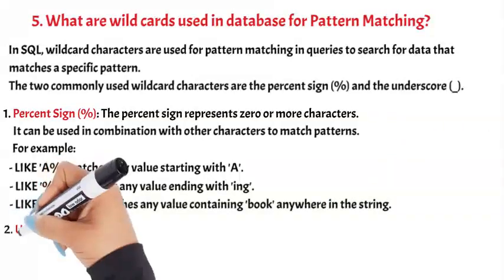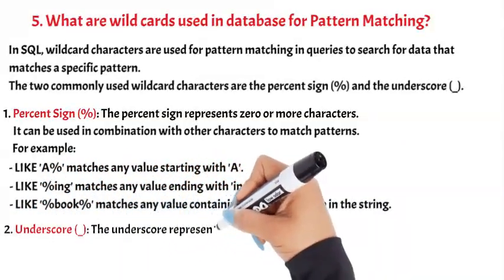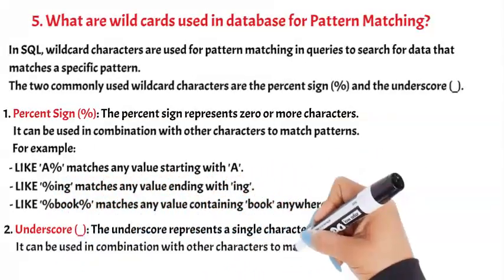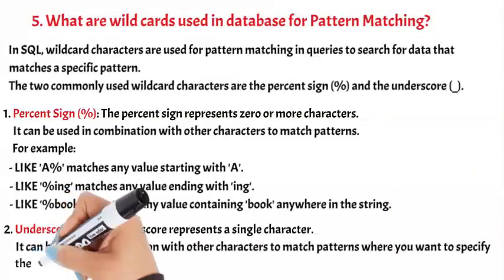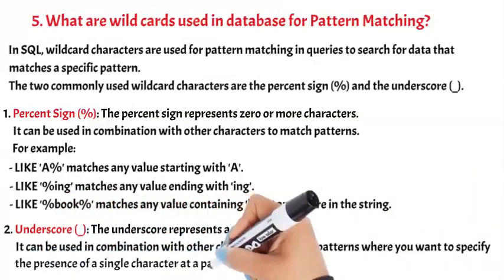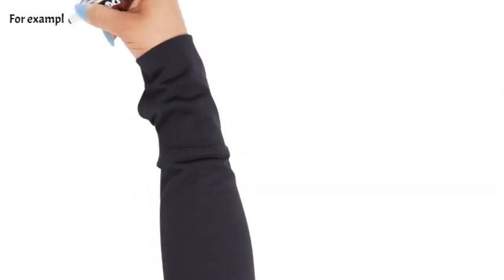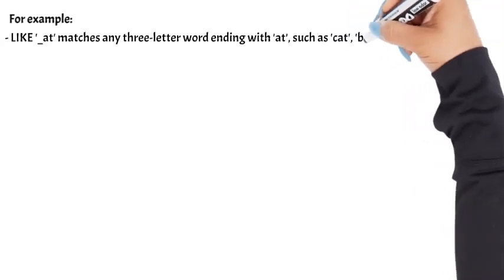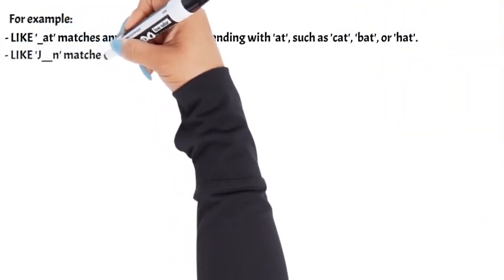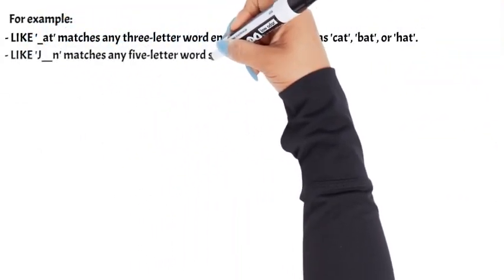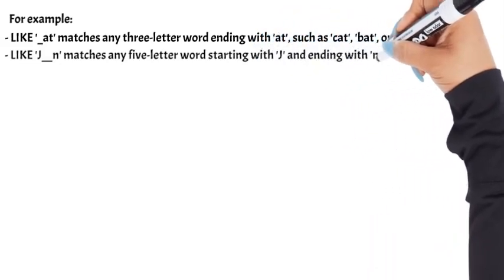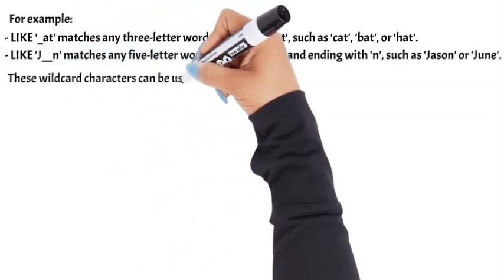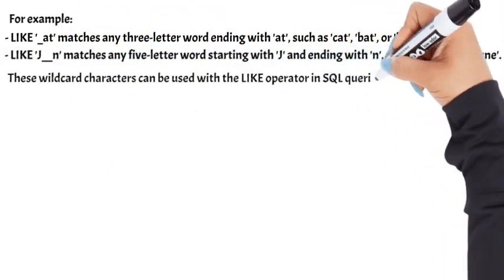2. _ (Underscore): The underscore represents a single character. It can be used in combination with other characters to match patterns where you want to specify the presence of a single character at a particular position. For example: LIKE '_at' matches any three-letter word ending with 'at', such as cat, bat, or hat. LIKE 'j___n' matches any five-letter word starting with 'j' and ending with 'n', such as jason, johan, or june. These wildcard characters can be used with the LIKE operator in SQL queries.